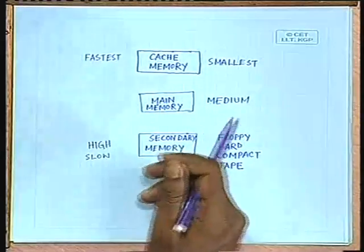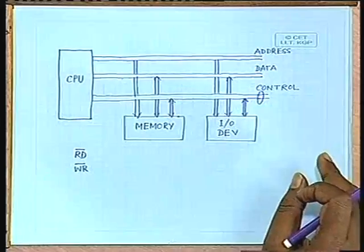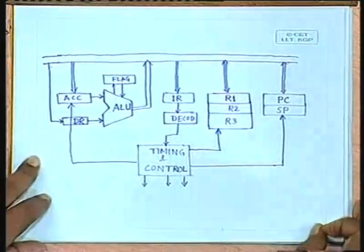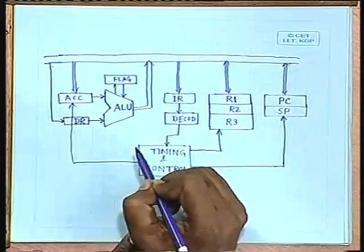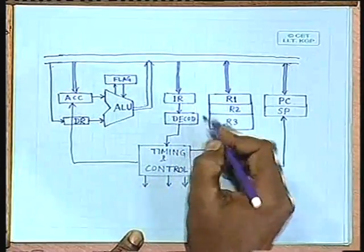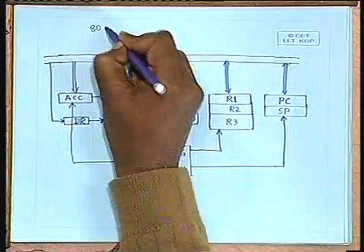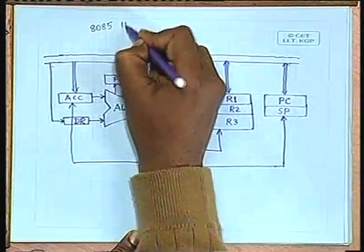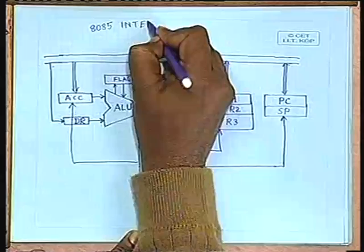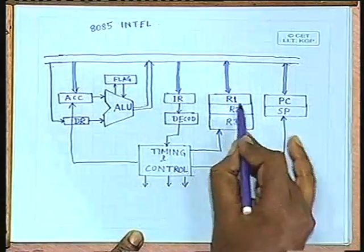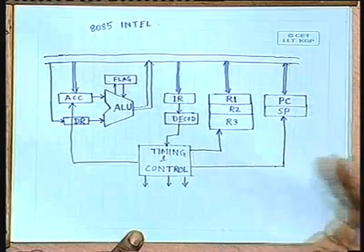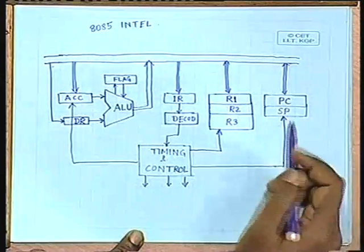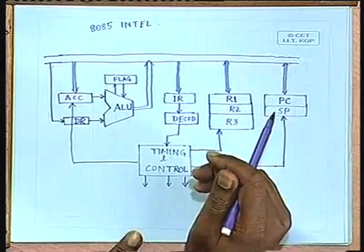We will elaborate on each of these topics in our subsequent lectures. This CPU architecture or CPU organization forms the basis of one of the simplest and very popular CPUs, which is known as the 8085, manufactured by Intel.